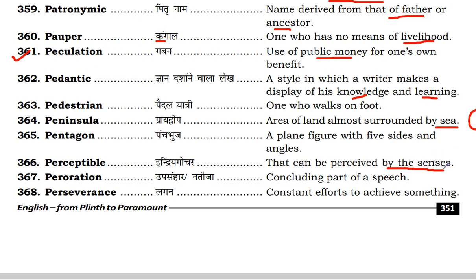Next is perceptible. Perceptible means that which can be perceived by the senses — something we can perceive and understand. Next is peroration. Peroration is the most important concluding part of a speech or reading.